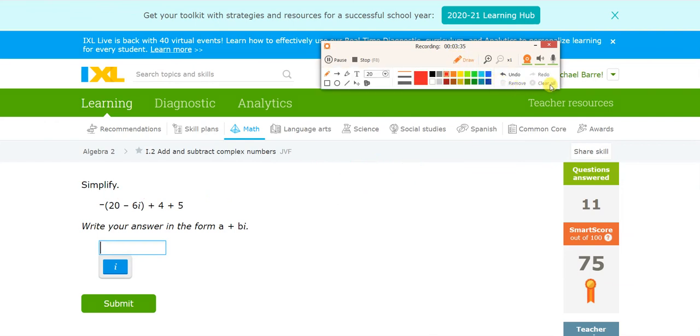Okay, a little distribution: negative 20 plus 6i plus 4 plus 5, 6i minus 11.